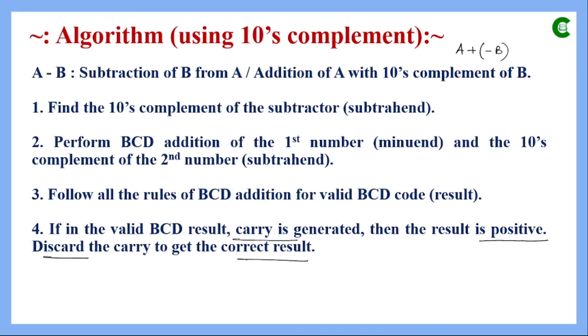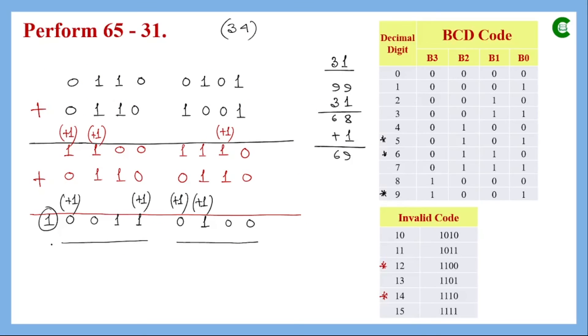With the 10's complement approach, it is simpler than the 9's complement approach. When we found the 10's complement by adding 1 to the 9's complement, that addition is already accounted for. So the carry is simply discarded, the result is positive, and the decimal equivalent is 0100 = 4 and 0011 = 3, giving a final result of 34.